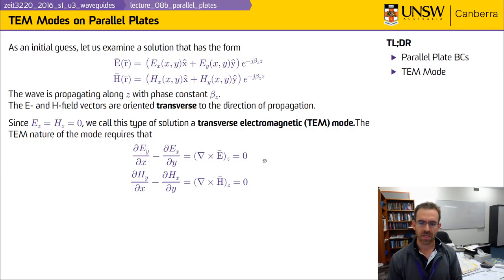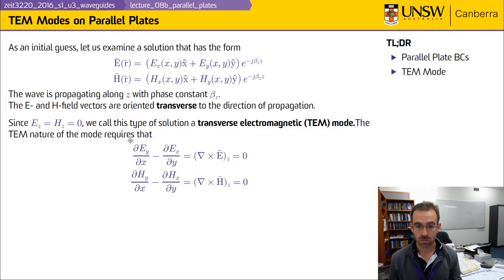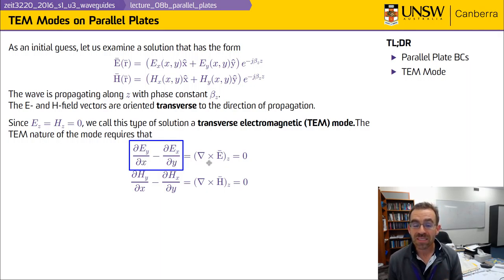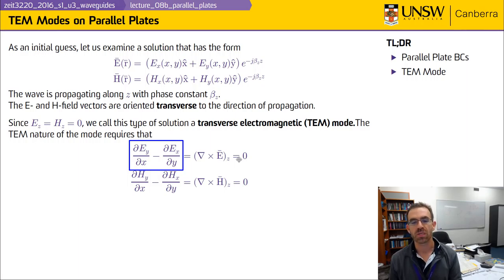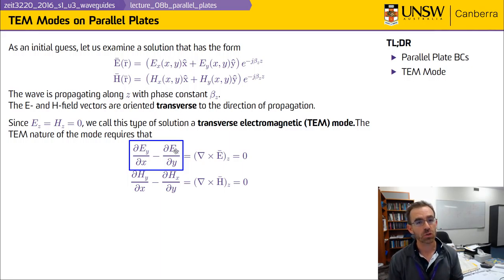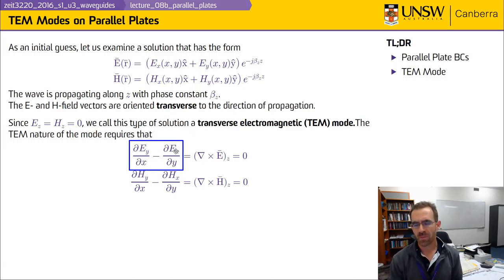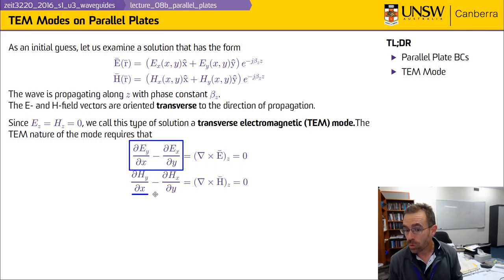One important feature of the transverse electromagnetic mode is that when I take the curl of E, it has a z component given by the derivative of E sub y with respect to x minus the derivative of E sub x with respect to y. Since the magnetic field has no z component, this aspect of the curl must be equal to zero. This actually means the TEM mode on a parallel plate waveguide is exactly the same as you'd get for a static capacitor, so we can solve a simpler set of equations. Similarly, since the electric field has no z component, the z component of the curl of H must also be equal to zero.